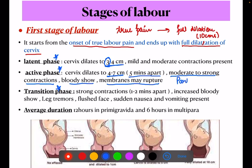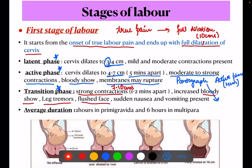Membranes may rupture in the active phase. The partograph charting also starts from the active phase, at four centimeters. Recently there have been changes in the partograph, which will be discussed in a separate video. Third is the transition phase — strong contractions from 7 to 10 centimeters, one to two minutes apart, with increased bloody show, leg tremors, flushed appearance, and sudden nausea and vomiting.